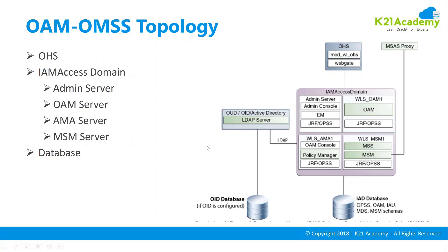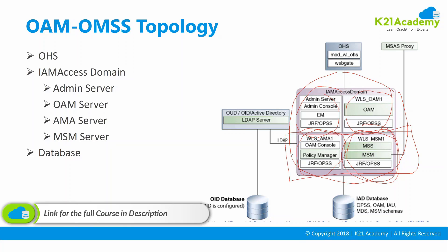You can also have an Oracle Access Manager only topology or an Oracle Access Manager with Oracle Mobile Security Suite topology — and in our Oracle Access Manager training, this is the topology we are going to deploy. Similar to Oracle Identity Governance, you have a WebLogic domain with one admin server and three managed servers. This time, one managed server is for Oracle Access Manager, and two are for Oracle Mobile Security Suite — one for Policy Definition and one for Implementation.